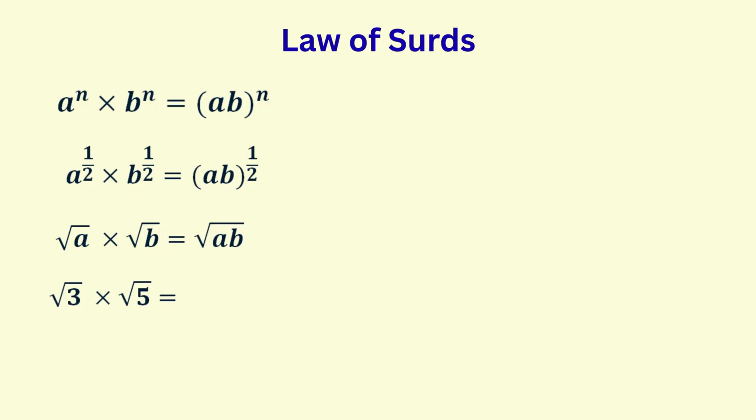For example, the square root of 3 times the square root of 5 is the same as the square root of 3 times 5, which is 15. Also, what if we want to simplify the square root of 20? We can rewrite 20 as 4 times 5. That means root 20 can be rewritten as root 4 times root 5. Now root 4 is 2, so root 20 can be rewritten as 2 root 5.